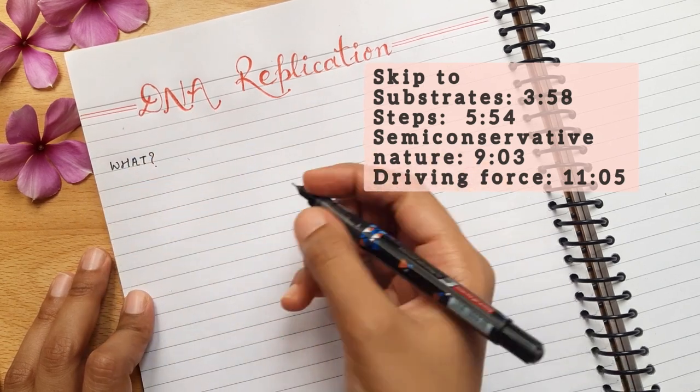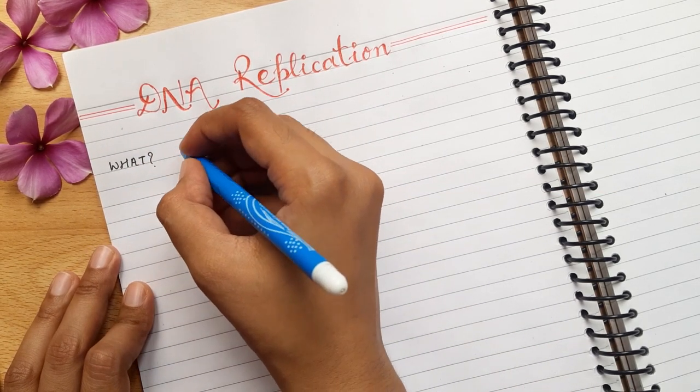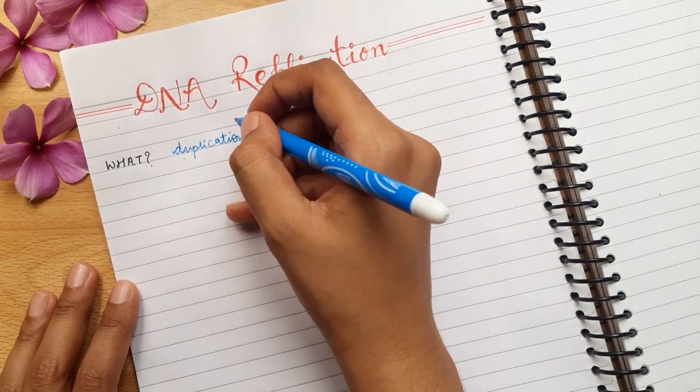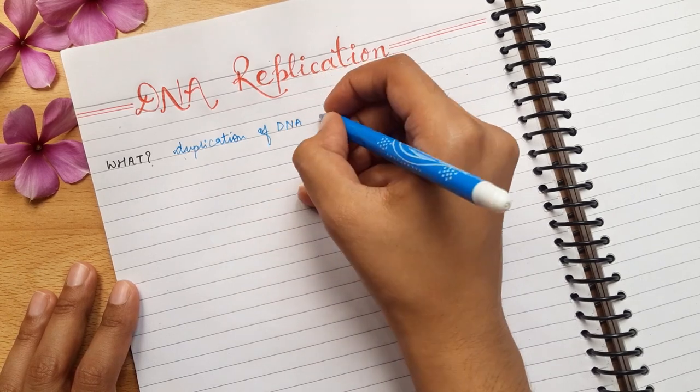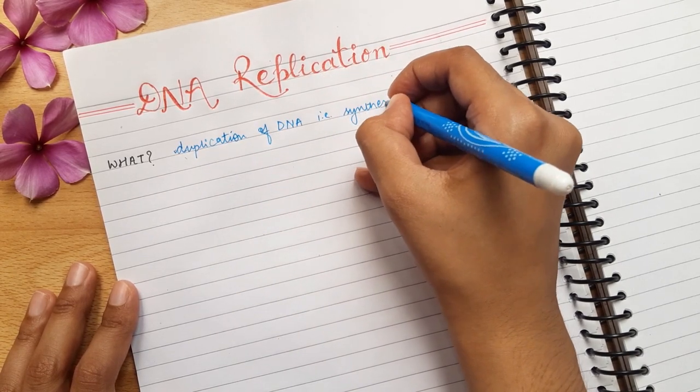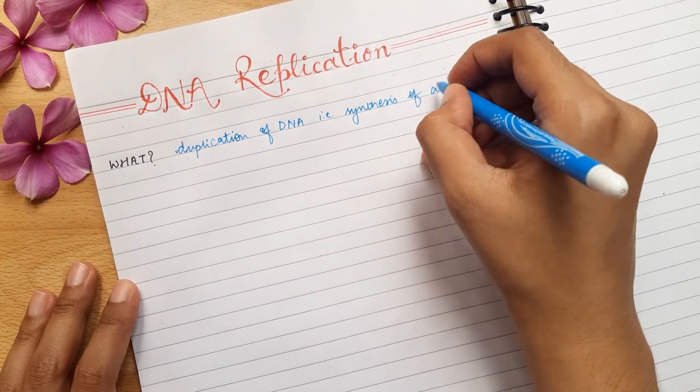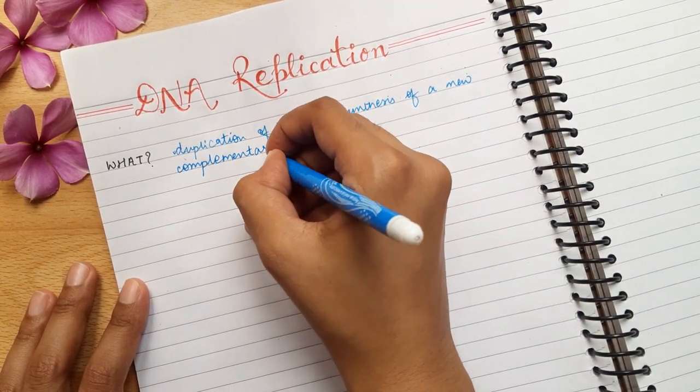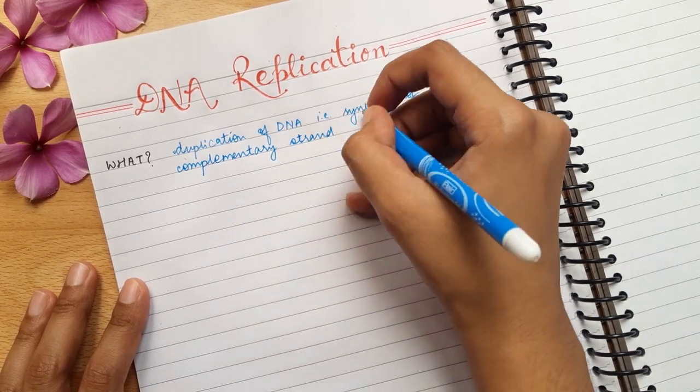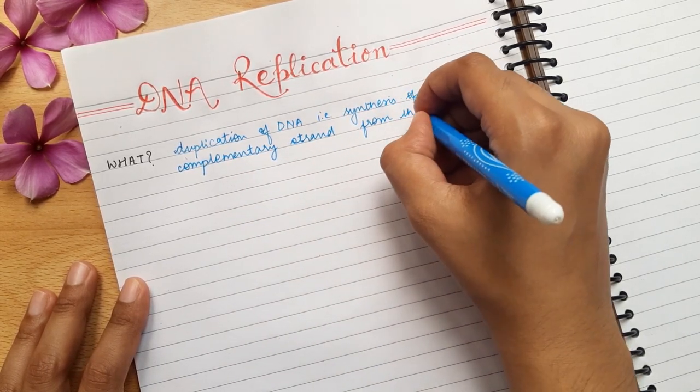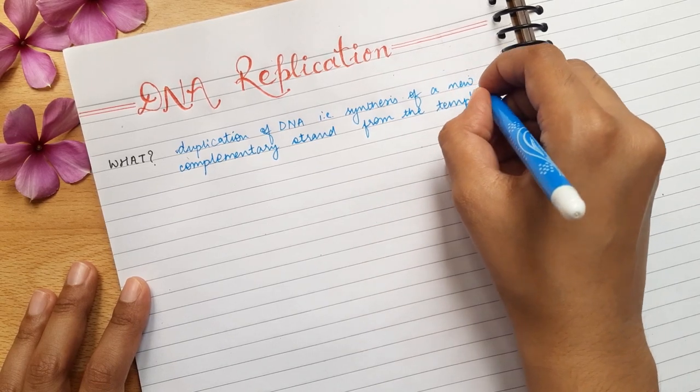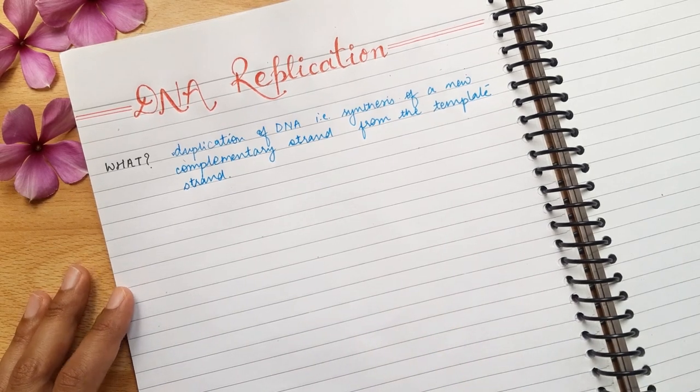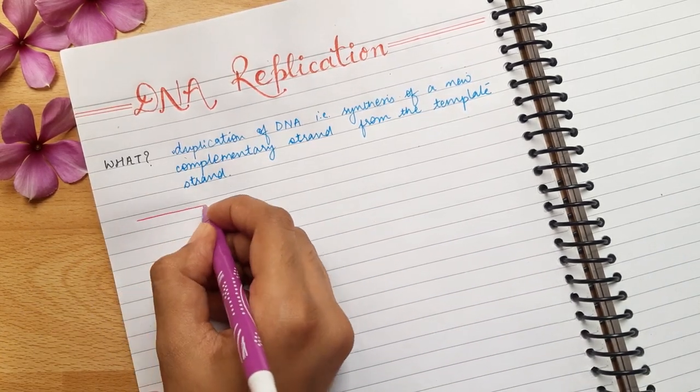Now, the first question which comes to mind is what is DNA replication? The definition goes like it is a process of duplication of DNA, that is the synthesis of new complementary strands of DNA from the template strands. Now, complementary strands are those strands which have their base pairs complementary to that of the template strand, and template strand is the one which needs to be replicated. Complementary, you understand, like if there's A on the template strand then there would be T on the complementary strand.